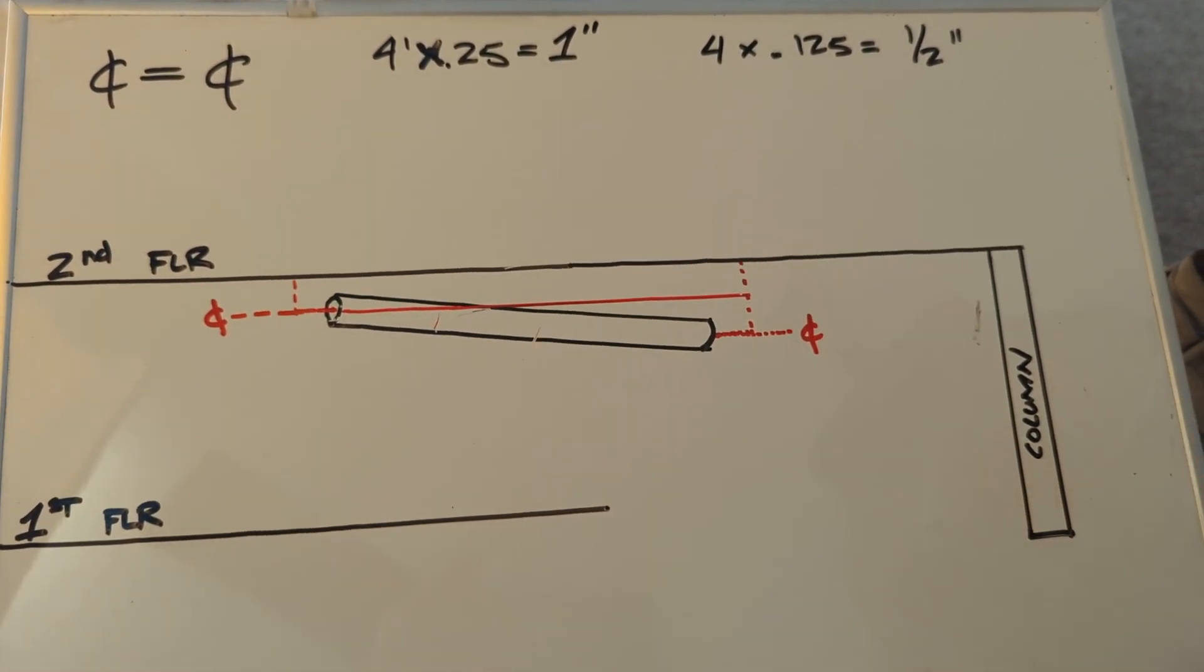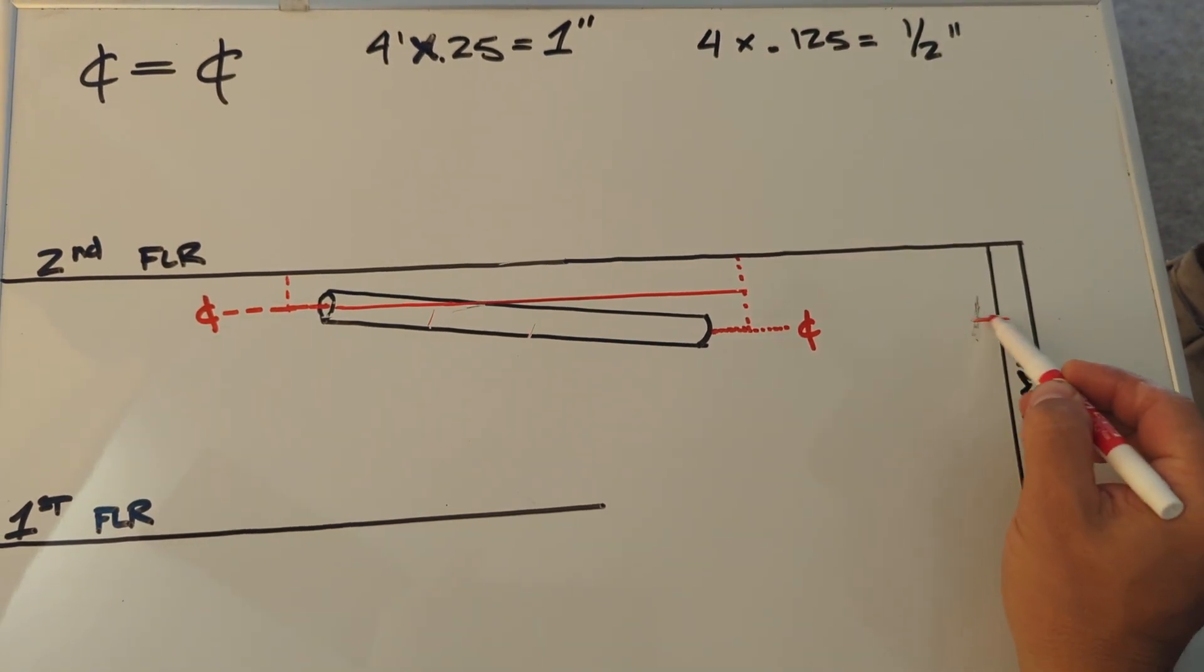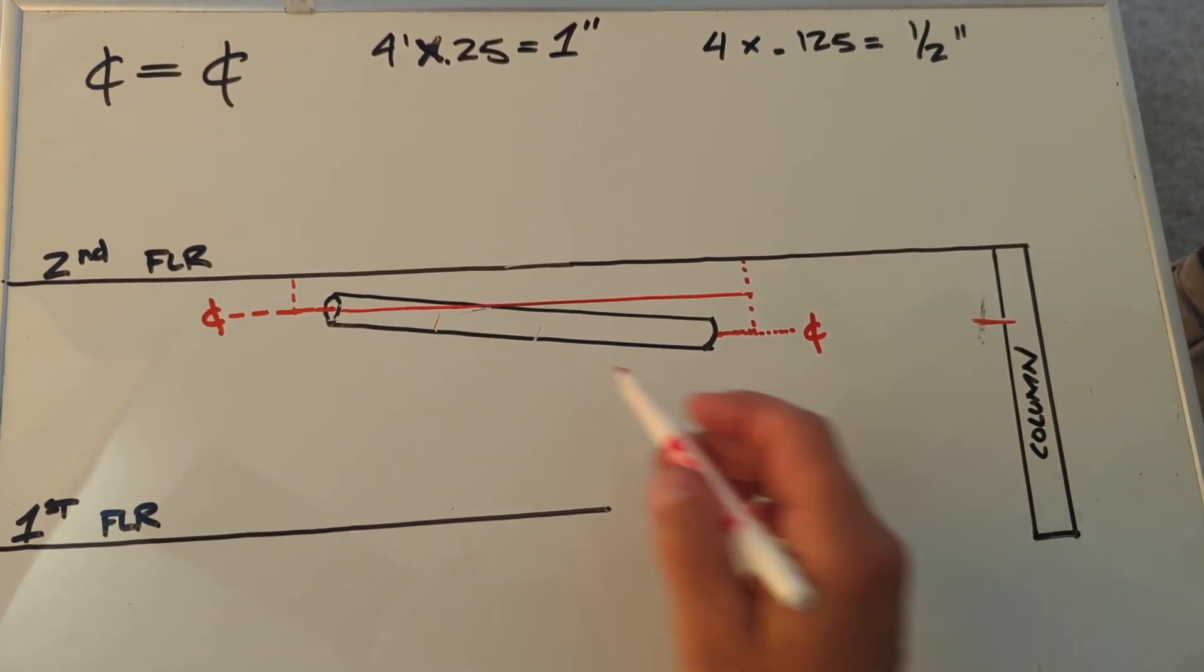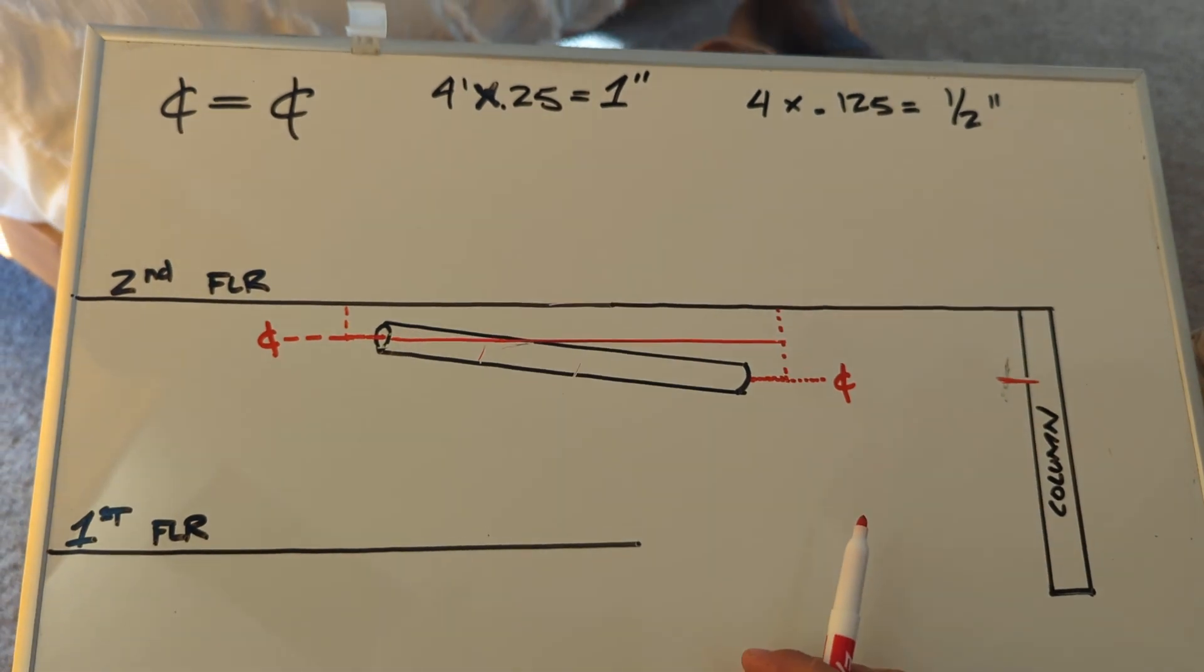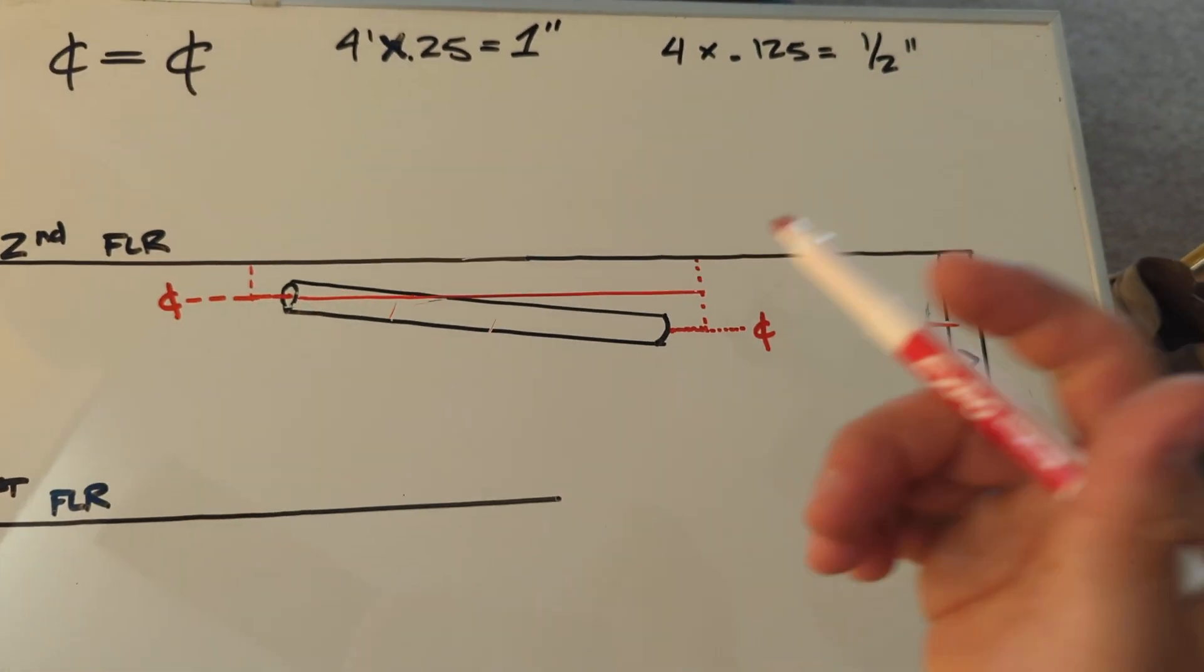So what I would do though is usually setting a benchmark off of a column. So you would put like a laser here, you would measure here, because you're not going to finish the whole project, you're not just going to install a 4 foot piece of pipe, you're going to install hundreds of feet of pipe.